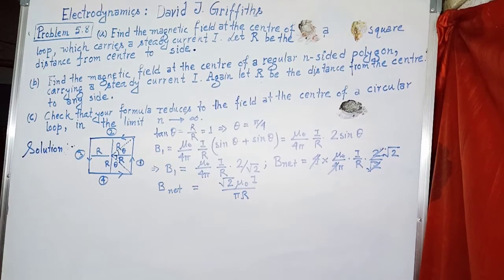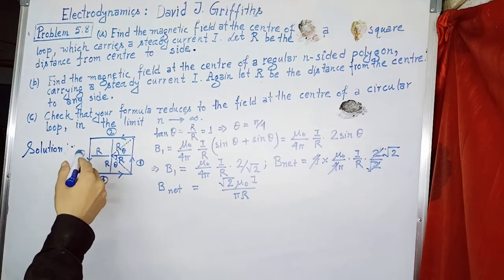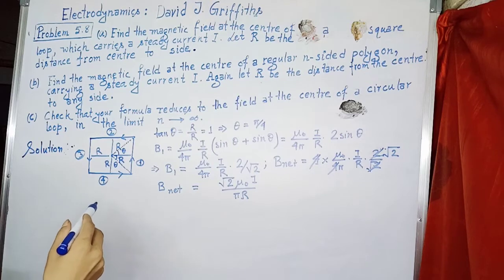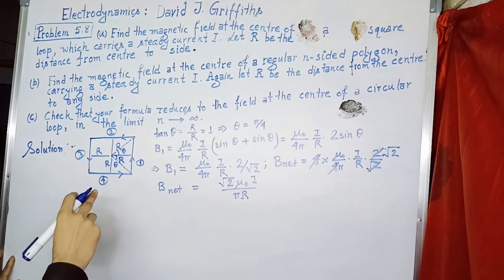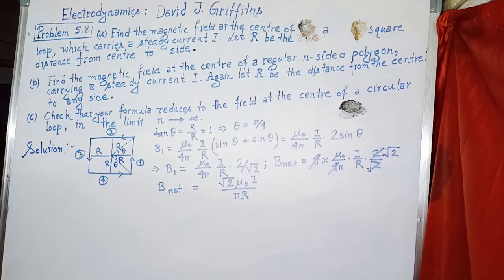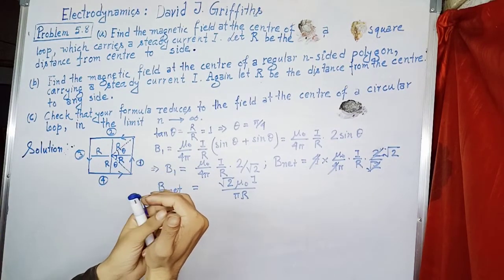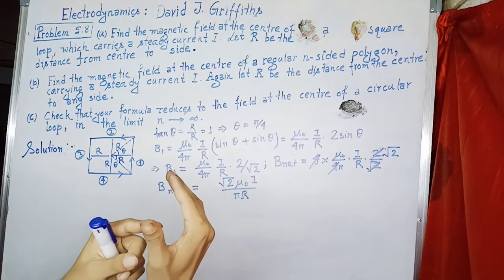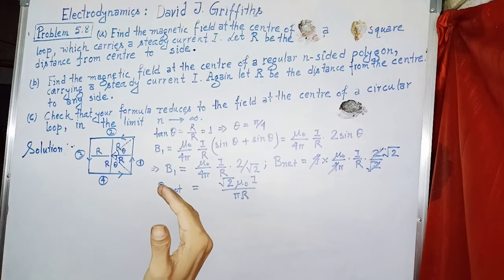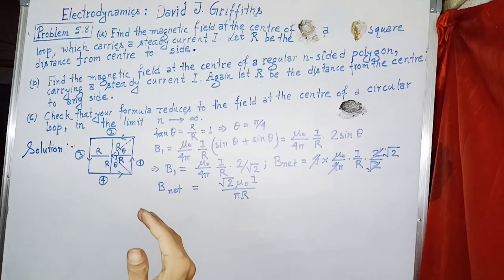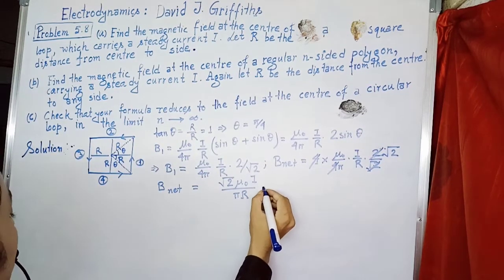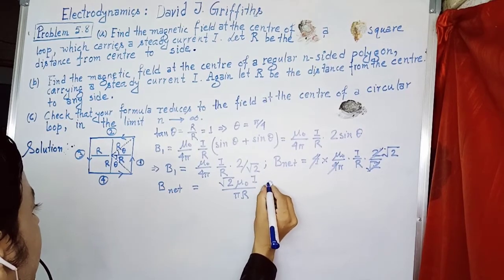For the direction of this magnetic field, we apply the right-hand rule. The current in the loop circulates in the anticlockwise direction. If we curl our fingers so that the curling indicates the direction of current flow, then our thumb indicates the direction of the magnetic field. Therefore, the direction of the magnetic field is towards the reader, or out of the plane.